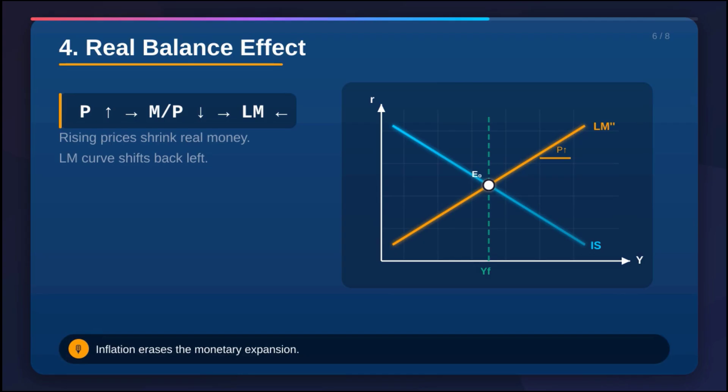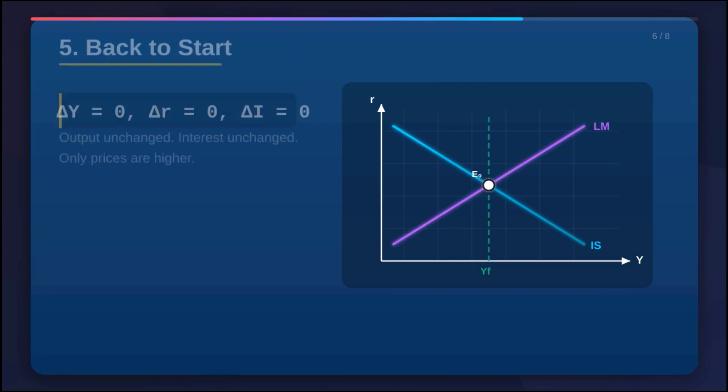So that rising price level actually forces the LM curve to shift back, all the way back to the left, right where it started. It's like a boomerang effect. You push it out with cash and inflation just pushes it right back. And we land at the exact same equilibrium point we started from.